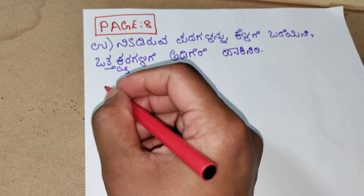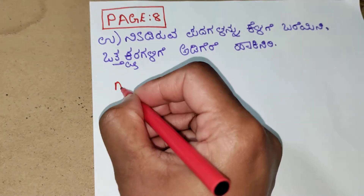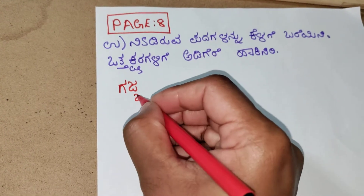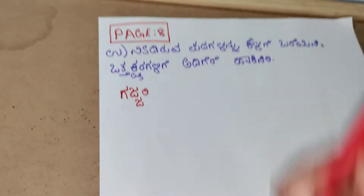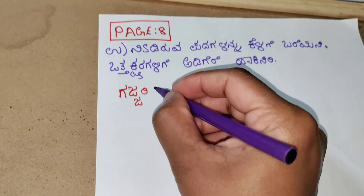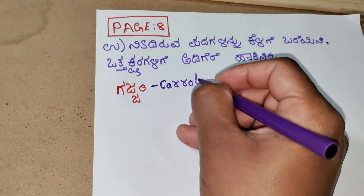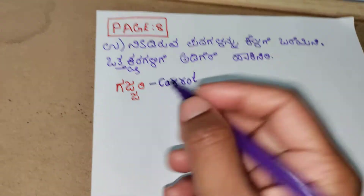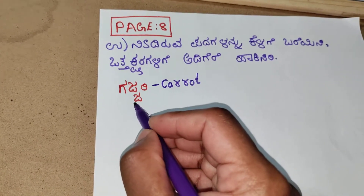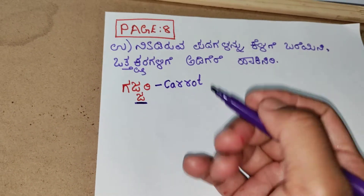The first word is gajari. Gajari — the meaning of gajari is carrot. Here the otthakshara is jage javato. This is the otthakshara; you need to underline the otthakshara.